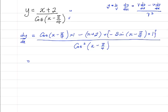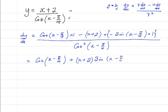So what we have here is cosine(x minus π/4) plus — because the negative times the negative is a positive — (x plus 2) multiplied by sine(x minus π/4), all over cosine squared(x minus π/4).